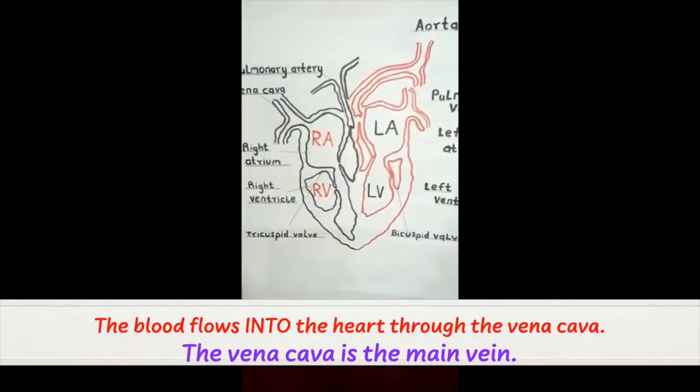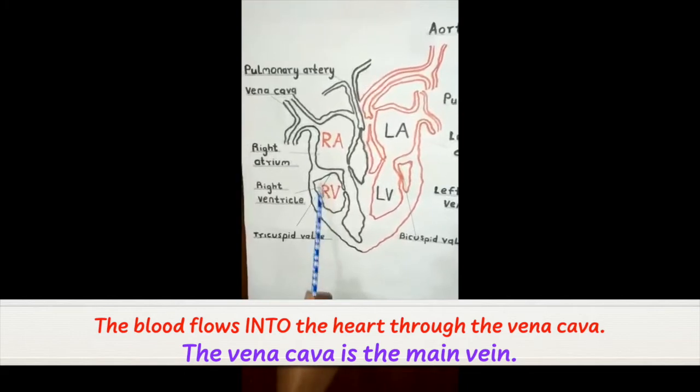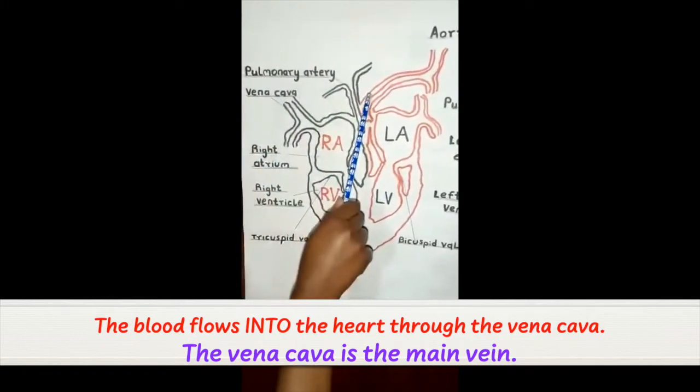This tricuspid valve is held by tendons. And the blood flows out of the heart to the lungs through the pulmonary artery.